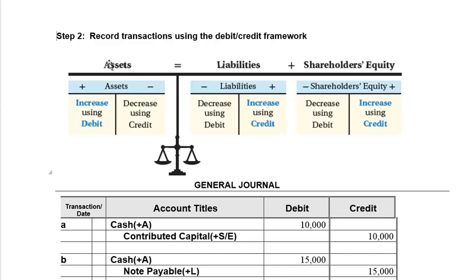Assets increase on the left-hand side, and left means debit. Liabilities increase on the right-hand side, and right means credit. Shareholders' equity accounts like contributed capital and retained earnings increase on the right, and right means credit. Debit and credit only mean left and right — they don't mean increase and decrease, because an asset increasing is debited while a liability increasing is credited.